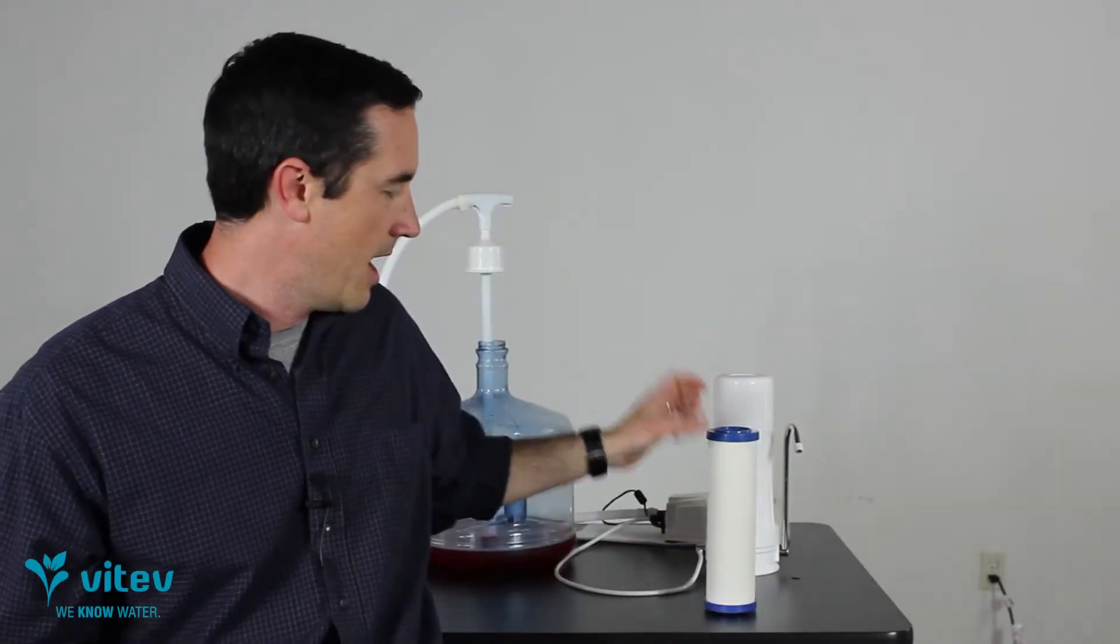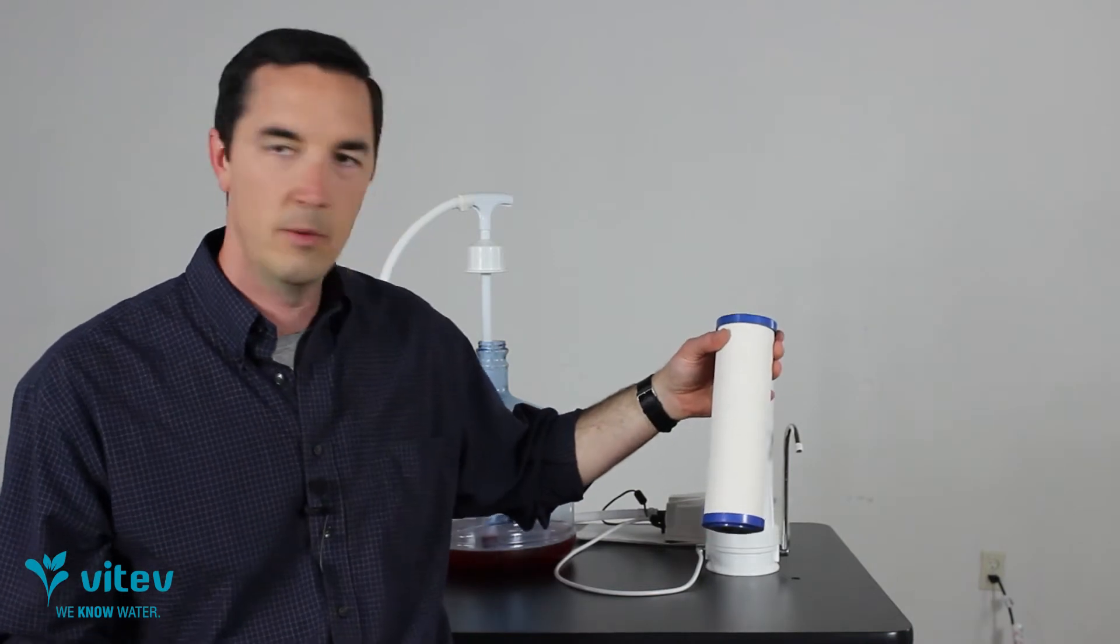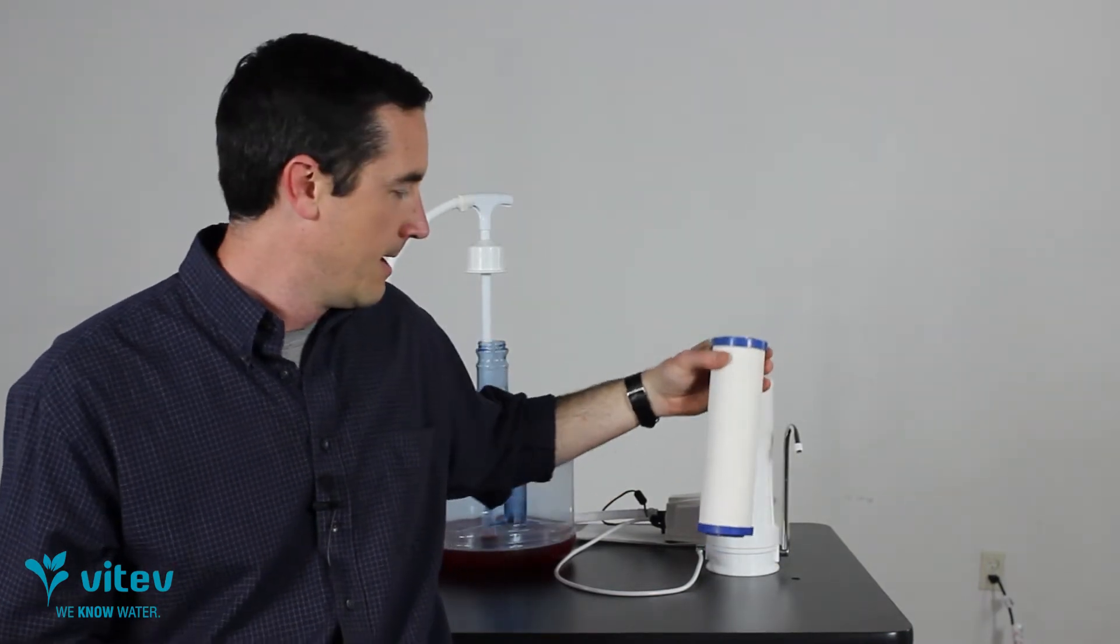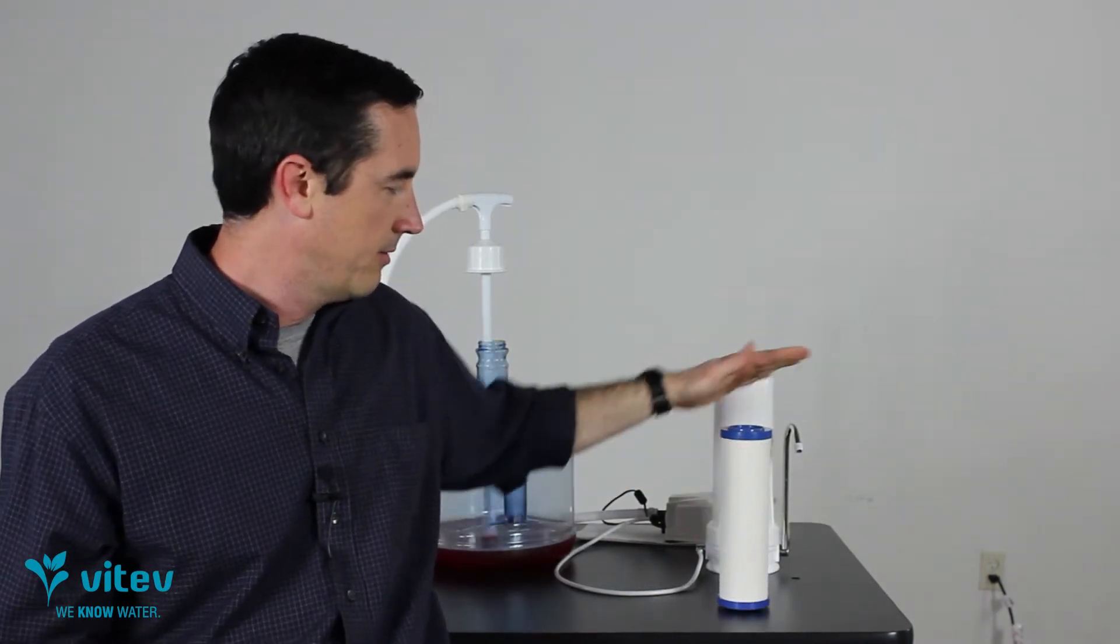Hey, it's Keith with Vitev. We're going to try something a little bit fun right now. We're going to do a test to see how well this ceramic cartridge, what we use in our Flow Plus and our Under Pluses, how well this cartridge can do with a very toxic substance. How well does it take out the contaminants in that liquid?